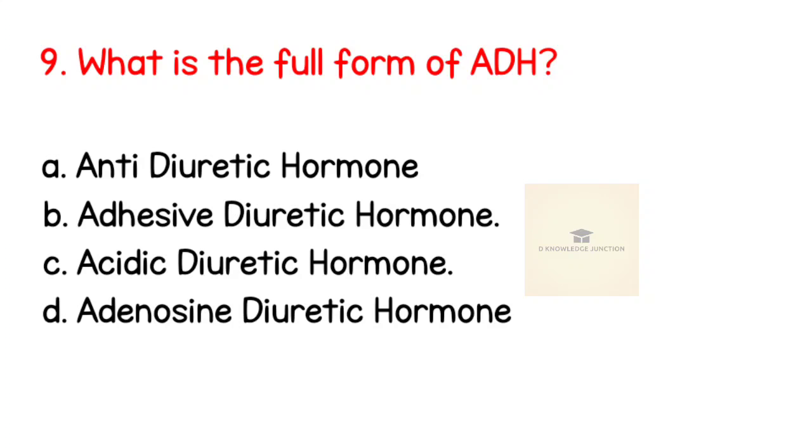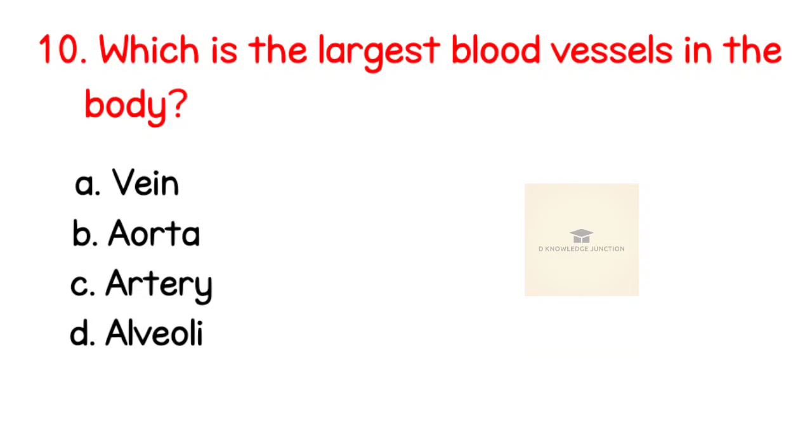Question number nine: What is the full form of ADH? Right answer is anti-diuretic hormone. Question number 10: Which is the largest blood vessel in the body? Right answer is aorta.